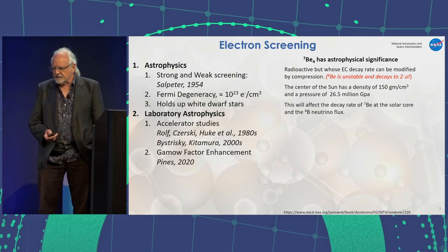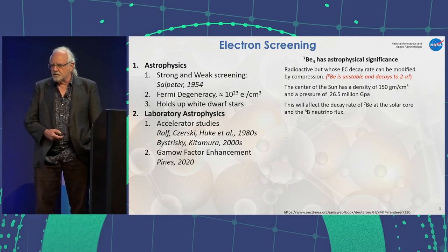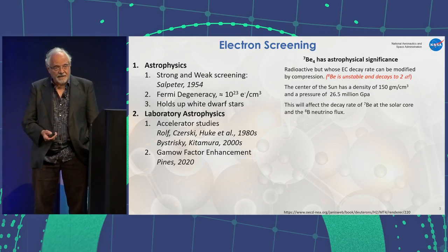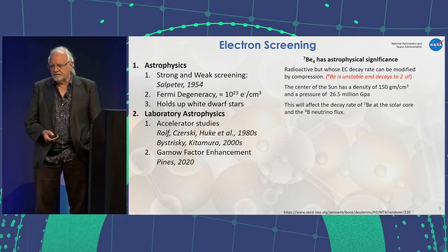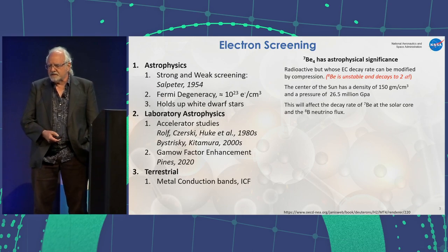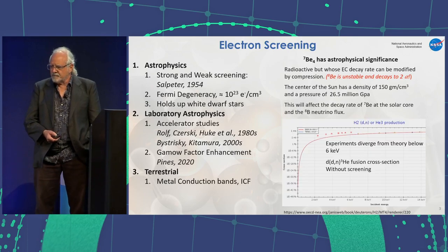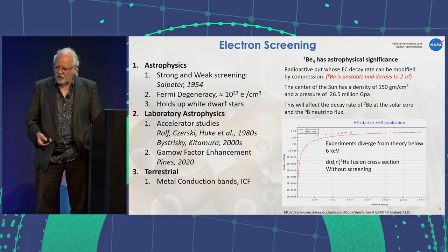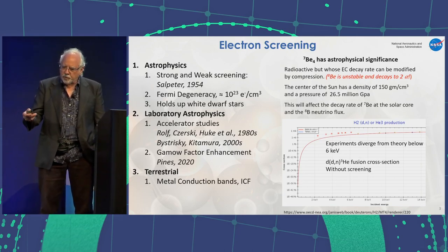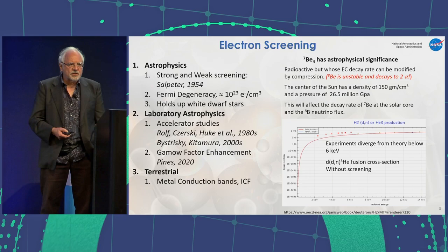Laboratory astrophysics studies and accelerator studies by Rolf Zersky and others in the 1980s, and Bersercki and Kitamura in the 2000s, looked specifically at the gamma factor enhancement that we published in PRC, led by Vlad Pynes. Terrestrially, this has an effect in metal conduction bands and in inertial confinement fusion. Experiments diverge from the gamma factor as the cross-section drops toward zero, yet reported points out to almost 2 keV show that there's an enhancement.